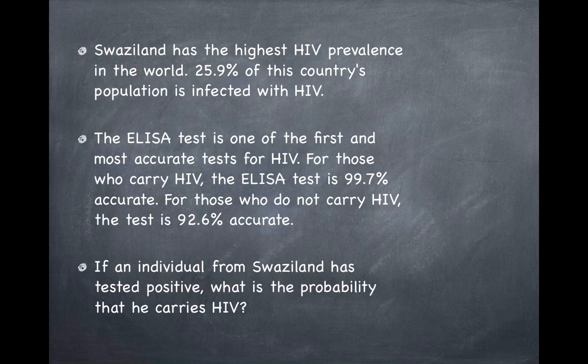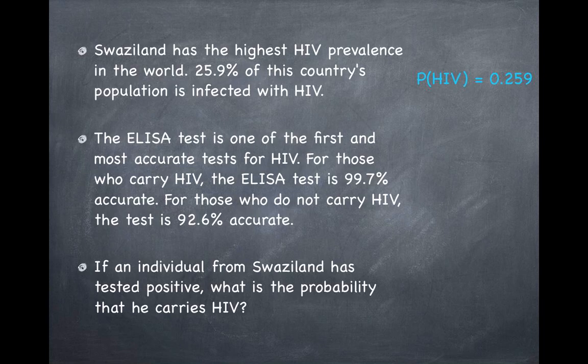Now let's try to translate these into probability terms. The first piece of information about the prevalence of HIV in Swaziland is really a marginal probability. If I randomly pick an individual from Swaziland, the probability that they are an HIV carrier is 0.259. The information about the accuracy of the ELISA test is not a marginal probability but a conditional probability. For those who carry HIV, the ELISA test is 99.7% accurate — in other words, if I know that a person has HIV, the probability that they test positive is 0.997.